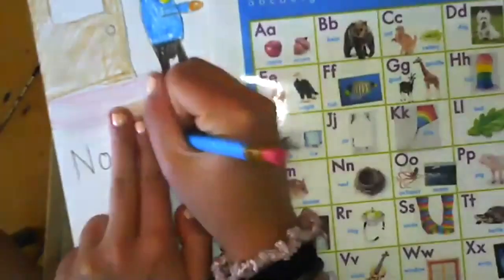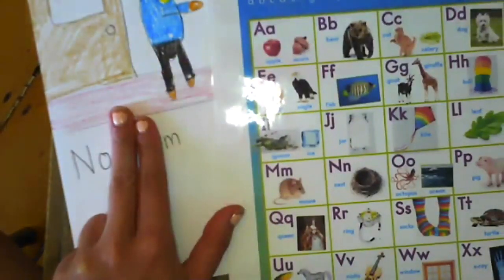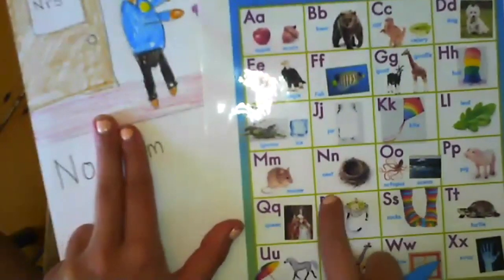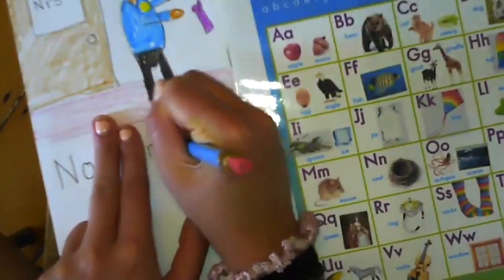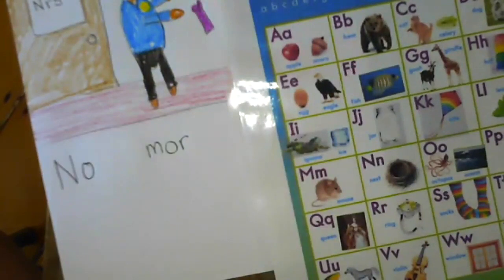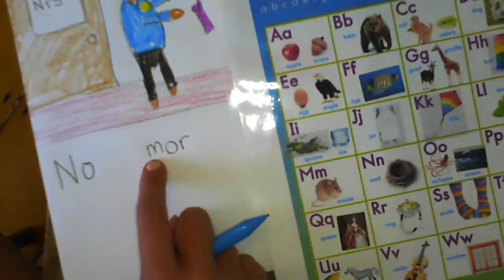No more. M mouse M. More. Oh, I hear the sight word OR. O R spells OR, with an M makes it more.